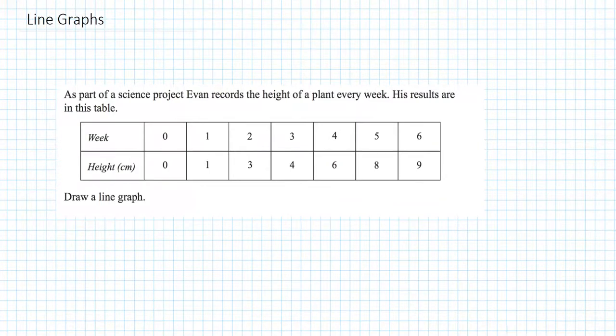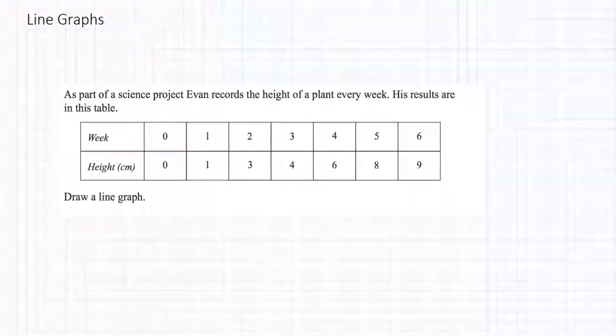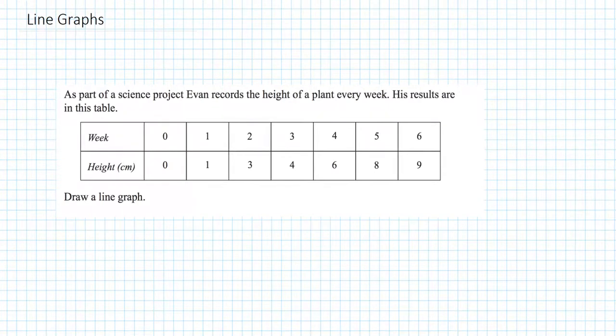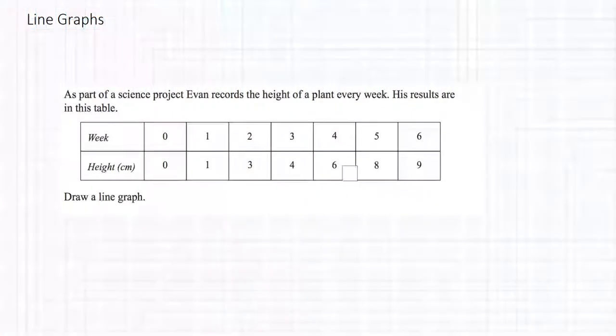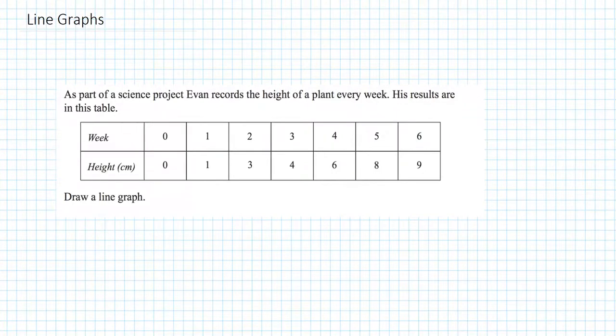First of all it's really important we understand that this is paired data and by that I mean each data point has two components. For example it has a week or time component and it has that height at that particular time. So at week two the height was three, at week four the height was six. They have to be drawn together and that is why a line graph can be a good tool in displaying paired data such as this.